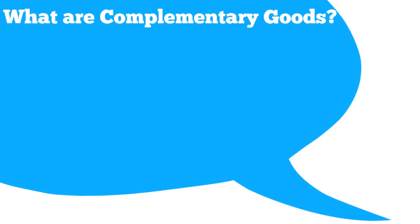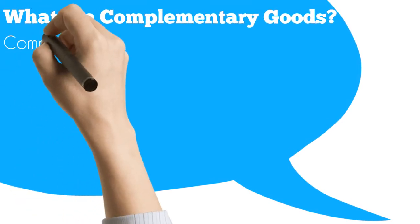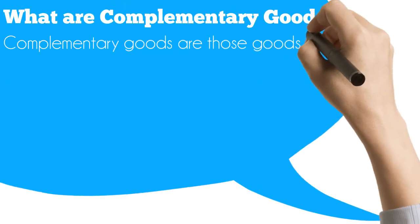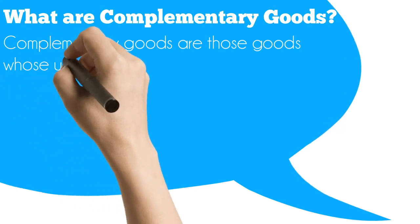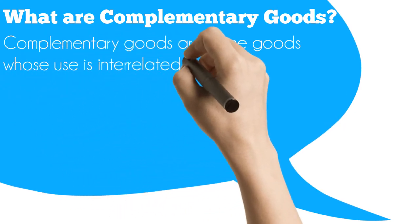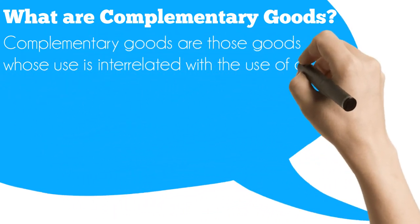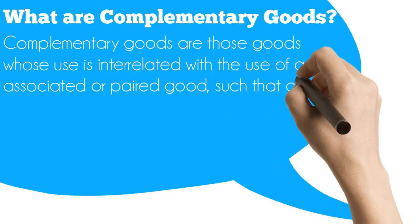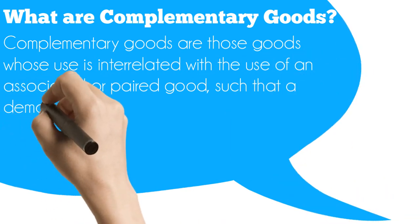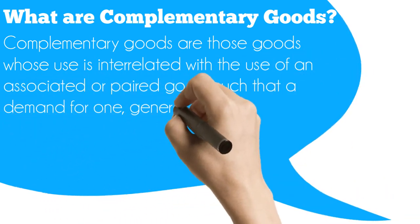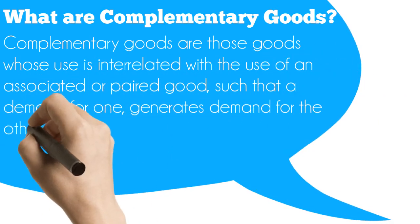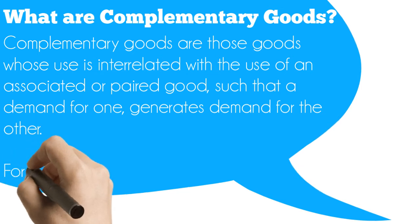Now let's discuss complementary goods. Complementary goods are those goods whose use is interrelated with the use of an associated or paired good, such that a demand for one generates demand for the other. For example, printers and ink cartridges.